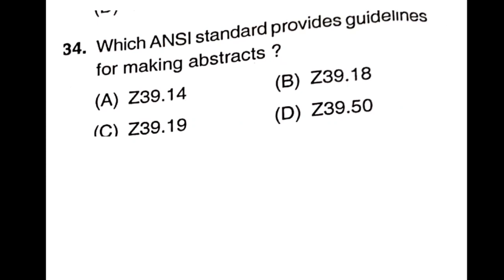Question 34: Which ANSI standard provides guidelines for making abstracts? The options are Z39.14, Z39.19, Z35.18, and Z39.50. Z39.14 is the right answer — option A.